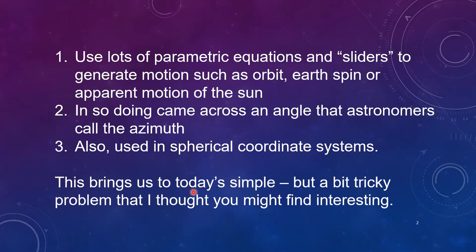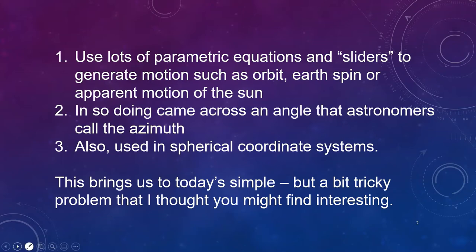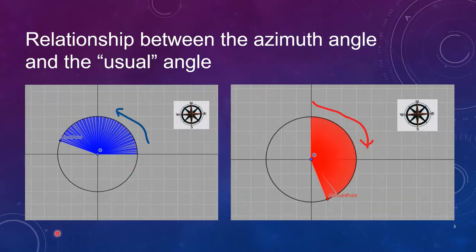It's also used in spherical coordinate systems which brought me to today's rather simple but a bit tricky and kind of interesting problem. I would like to spend some time understanding the relationship between the azimuth angle and what I would call the usual angle.